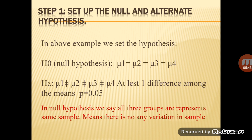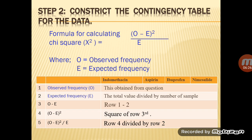The first step is to set up the null and alternative hypothesis. The null hypothesis (H₀) states that μ1 = μ2 = μ3 = μ4 — that is, all four samples are equal, meaning all groups represent the same population with no variation. The alternative hypothesis (Hₐ) states that at least one is different.